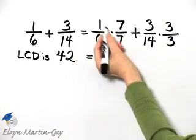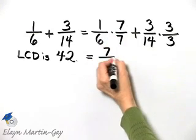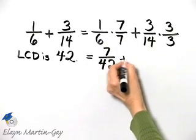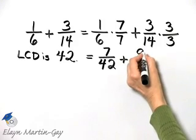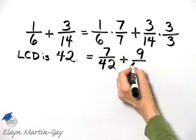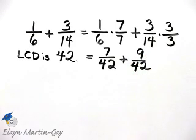So let's continue. Let's multiply. 1 times 7 is 7 over 6 times 7 is 42. Plus 3 times 3 is 9 over 14 times 3 is 42. Just like I want.